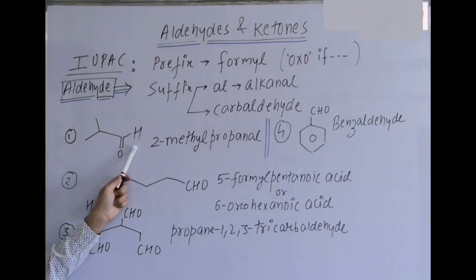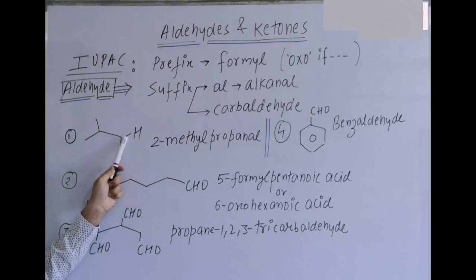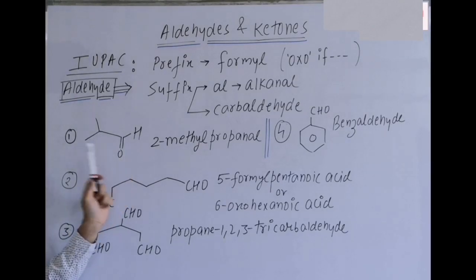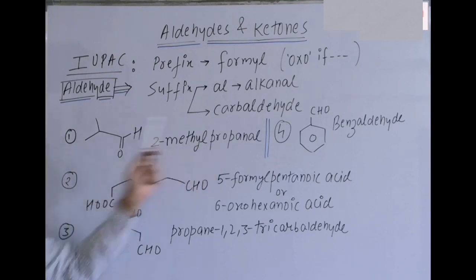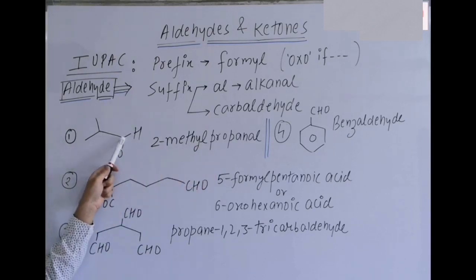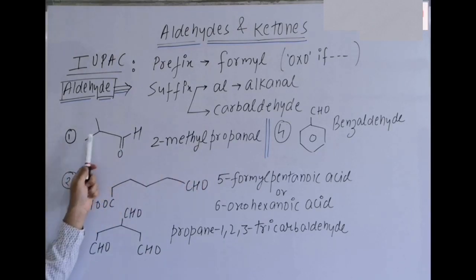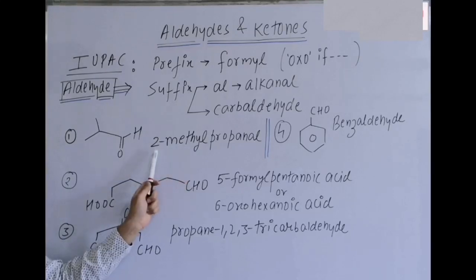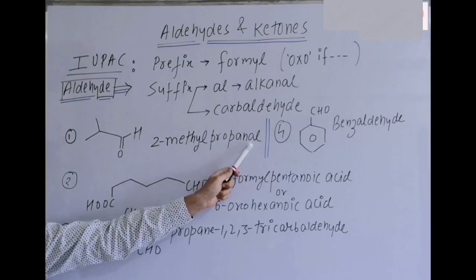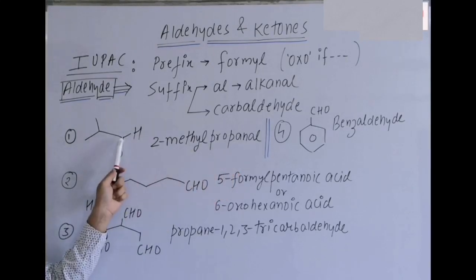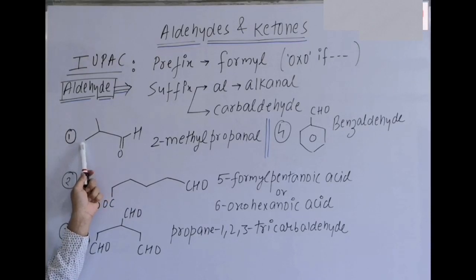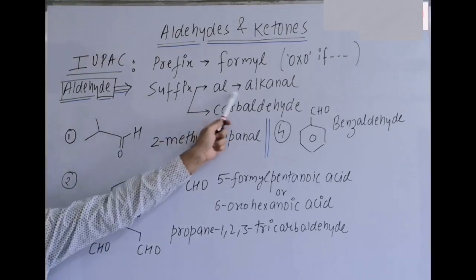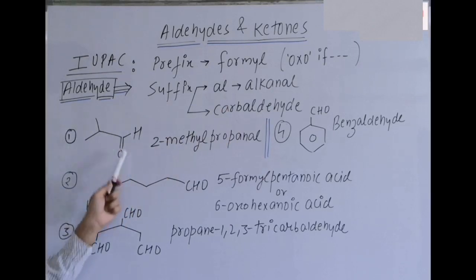First example: the chain has three carbons with a carbonyl functional group whose carbon is counted — no need to mention its position number. At the second carbon there is a methyl (alkyl) group, giving '2-methylpropanal'. The main chain has three carbons and the functional group is aldehyde — 'al'. It is open chain, so the first suffix is used.